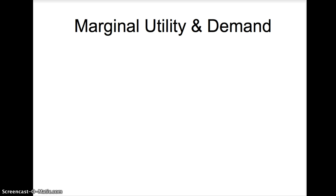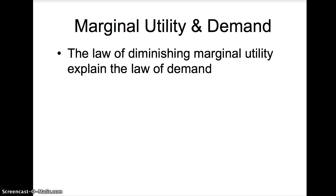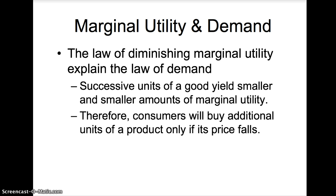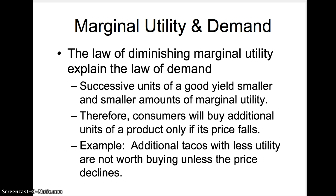Marginal utility and demand. The law of diminishing marginal utility helps explain the law of demand. Since successive units of a good yield smaller and smaller amounts of marginal utility, consumers will buy additional units of a product if the price decreases. For example, additional tacos that yield lower levels of utility are not worth buying unless price decreases.